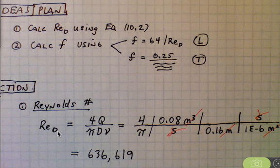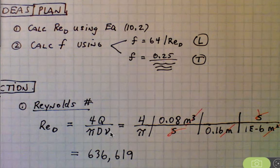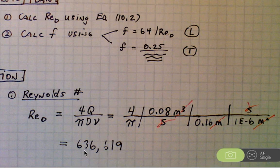Here's the Reynolds number calculation. To do the calculation, I needed kinematic viscosity, so I went ahead and looked that up and documented the value right here. As shown, the Reynolds number is given here. Therefore, the flow is turbulent.